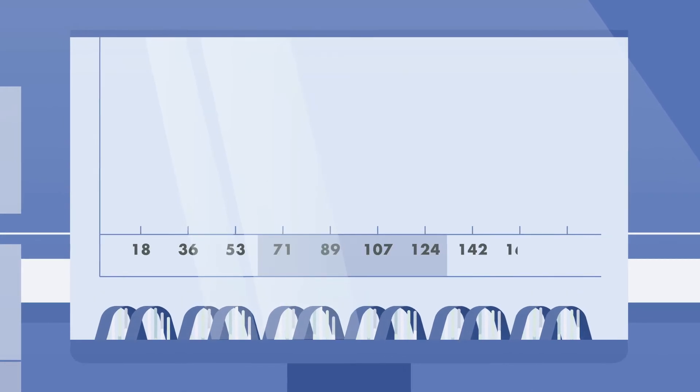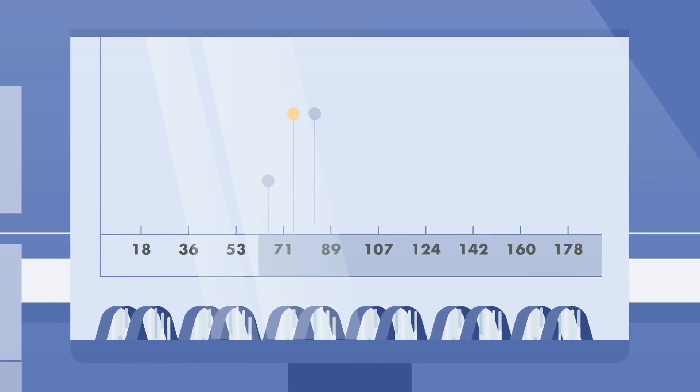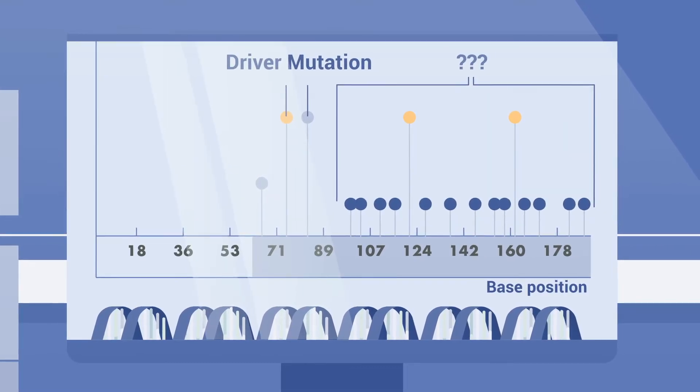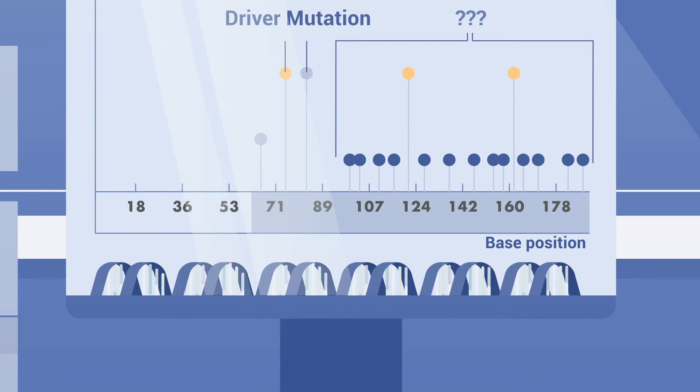However, the role of most identified variants in tumor development remains unknown, even for mutations located in well-known cancer genes. But what if we could use computational biology to accelerate this task?